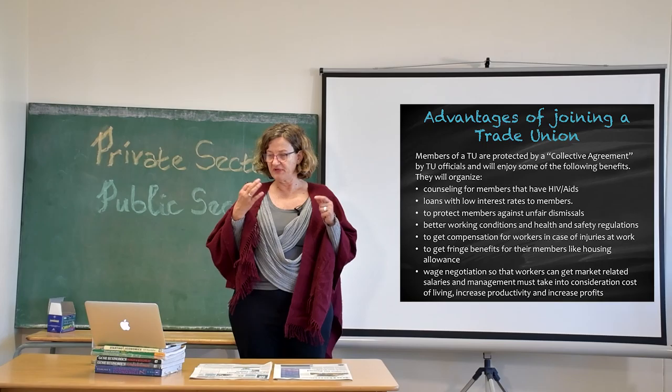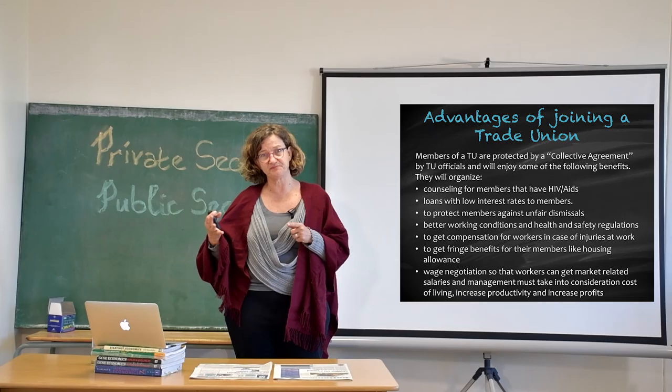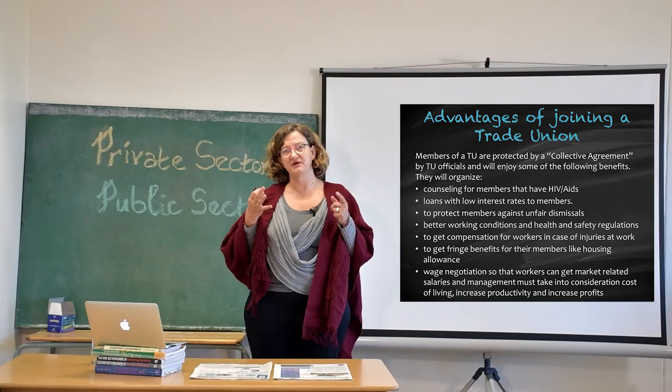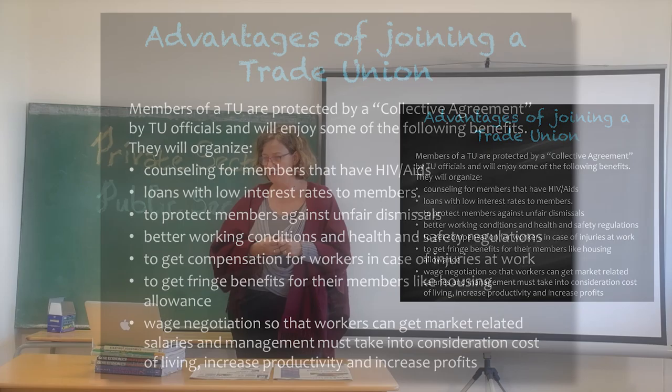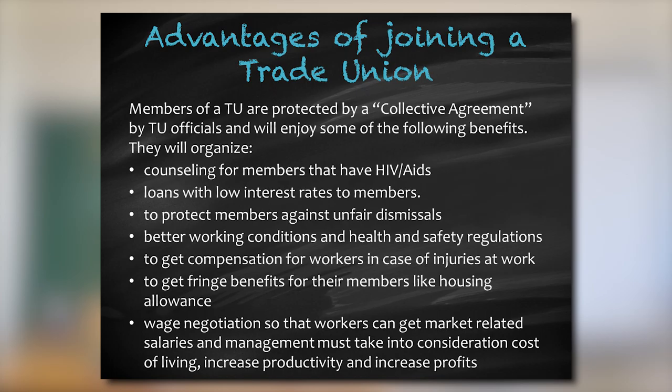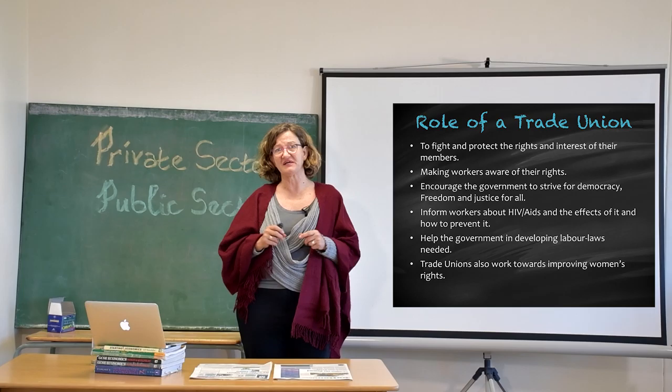Trade unions try to get better fringe benefits such as housing allowance and medical allowance. Remember, housing and medical allowances are not legally required, so you cannot force a business to pay them — that is why trade unions continue bargaining for those benefits. Wage negotiations are something that continuously go on. They argue for market-related salaries on the basis that workers are more productive, bring down the cost of the firm, and increase profit — these are the types of arguments offered for why members should receive a better salary.